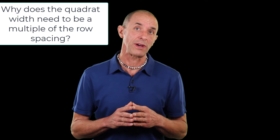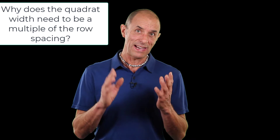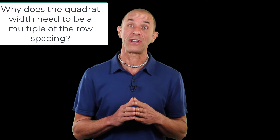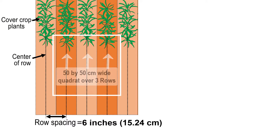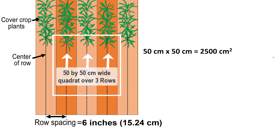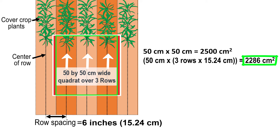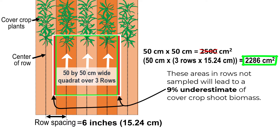The second reason the quadrat width should be a multiple of the row spacing is that if it's not, it can easily lead you to incorrectly calculate the cover crop biomass per unit area. For example, if you used a 50 by 50 centimeter quadrat and stated it covered three rows, then used that quadrat area of 2,500 square centimeters to calculate biomass per unit area, your calculation would be incorrect — because the quadrat area actually extends into neighboring rows that were not sampled. The area allocated to the three rows sampled is actually 2,286 square centimeters, not 2,500 square centimeters. That's the mistake I made in many of my cover crop articles, causing my biomass data to underestimate by 9%.